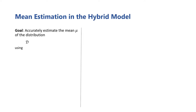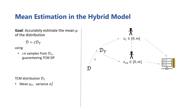To get started with this, we revisit the problem of mean estimation, now viewed through this hybrid lens. Our goal is still to estimate the mean of some distribution d from n samples. However, now we assume that a c fraction of those samples come from a distribution that is specific to the trusted curator model user's data.